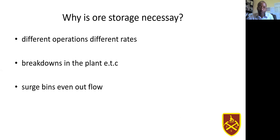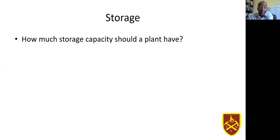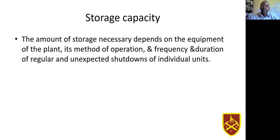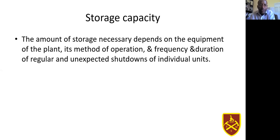Another use is to even out flow — you want smooth running of unit operations to increase efficiency. The capacity of storage in your plant is determined by looking at the equipment in the plant and the method of operation, including the frequency and duration of breakdowns. For example, the worst-case scenario could be a 24-hour major breakdown, so your storage supply should be able to cater for that 24-hour maintenance or repair of the plant.